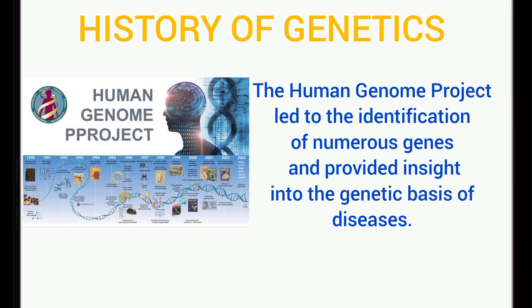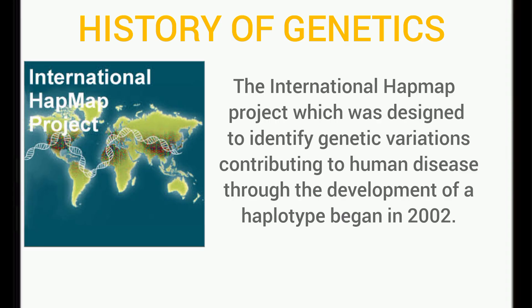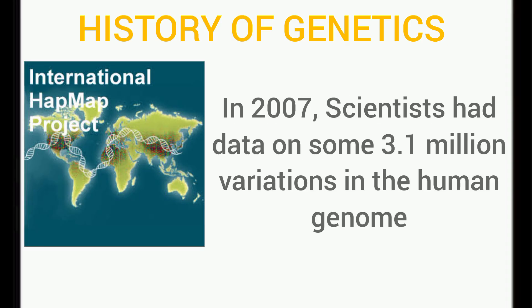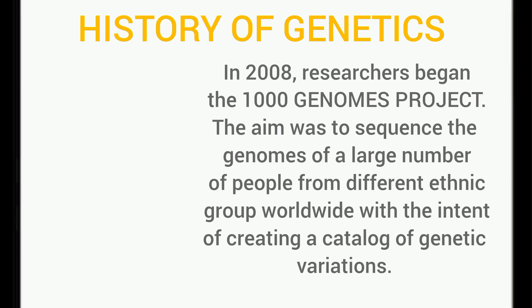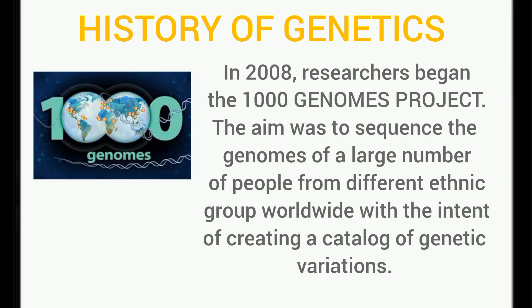The international Human Genome Project was completed in 2003. It led to the identification of numerous genes and provided insights into the genetic basis of diseases like sickle cell disease. In 2007, scientists had data on numerous variations in the human genome. In 2008, researchers began the 1000 Genomes Project, with the aim of sequencing the genomes of a large number of people from different ethnic groups worldwide, to create a catalog of numerous genetic variations.